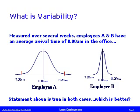So what do we mean by variability? Here is a simple example. Two employees' arrival time is measured over several weeks. Both are identified as having an average arrival time of 8am. But which employee would be better to schedule a meeting with? Employee B, because at most he is going to be either 5 minutes early or 5 minutes late. With employee A they will either be very early or 30 minutes late — that level of variation is unacceptable.